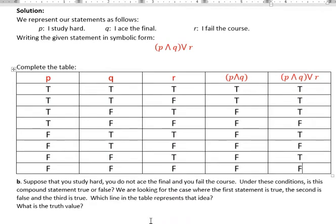And so this question at the bottom says, suppose that you study hard, you do not ace the final and you fail the course. You do study hard, you do not ace the final and you do fail the course. So in this case, you study hard, that's got to be one of these true statements. You do not ace the final, that's going to be one of these false statements. So I know it's one of these two rows and you fail the course.